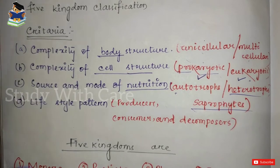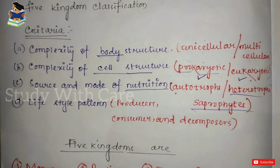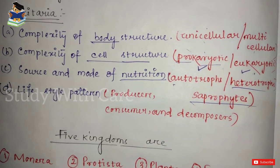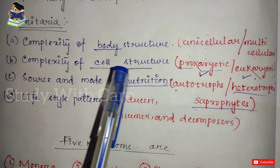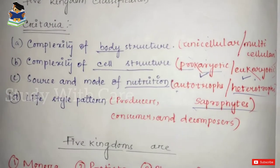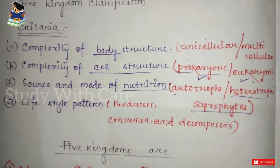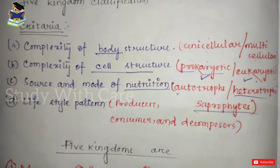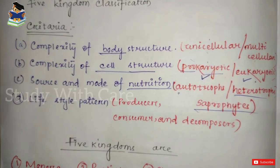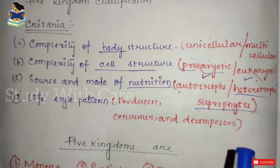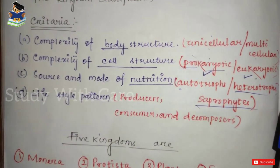The first criterion is complexity of body structure — whether the organism is unicellular or multicellular. He included unicellular organisms into one group and multicellular organisms into another group. The next criterion is complexity of cell structure: he included all prokaryotic organisms into one group and eukaryotic organisms into another group.